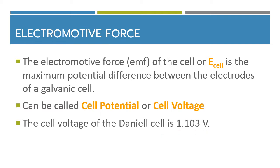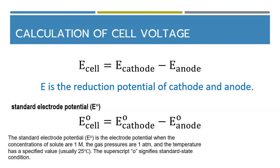How do we get this value? The calculation of cell voltage is: E_cell = E_cathode minus E_anode, where E here is the reduction potential of the cathode and anode. If we look at the system at standard state, we use the superscript zero. So we can calculate E°_cell = E°_cathode minus E°_anode.